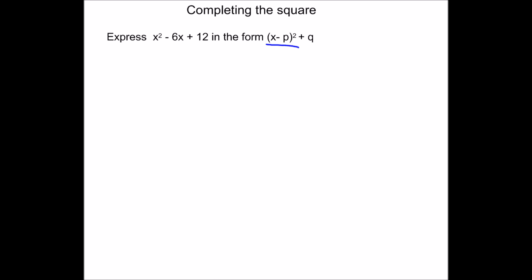Here we've got the question: express x squared minus 6x plus 12 in the form x minus p, all squared, plus q. This is a typical complete the square question — it's not going to say 'complete the square' in it. The key to recognising that it's a complete the square question is the fact that we've got this square bracket and a collection of letters.